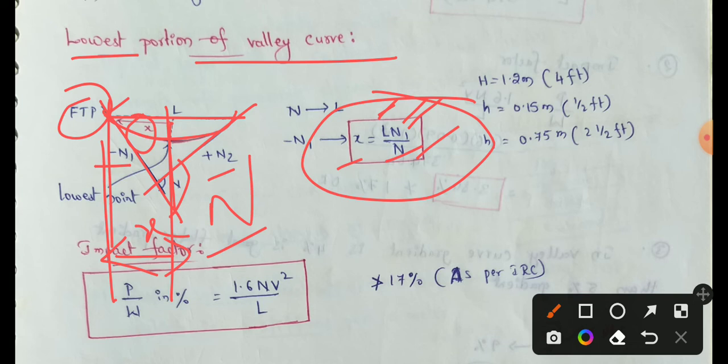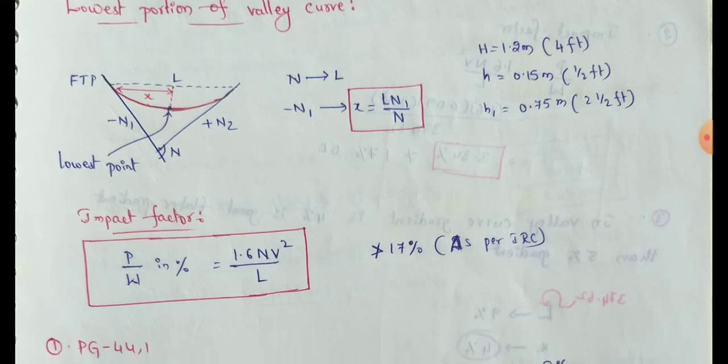Capital N means the deviation angle. Using this formula, we can measure the lowest portion of the valley curve. Next, the impact factor.